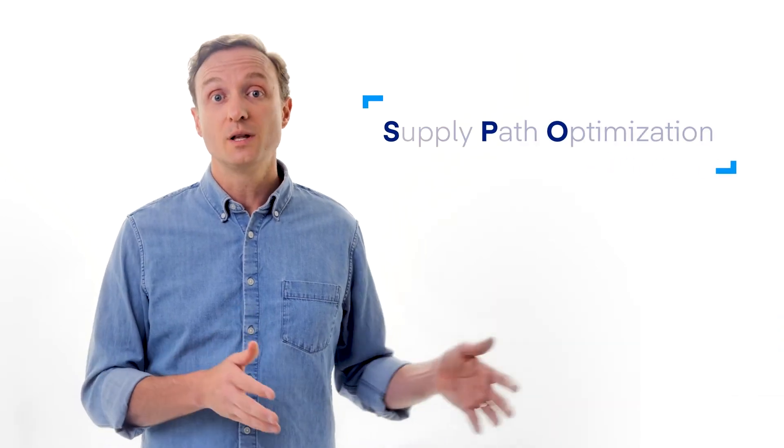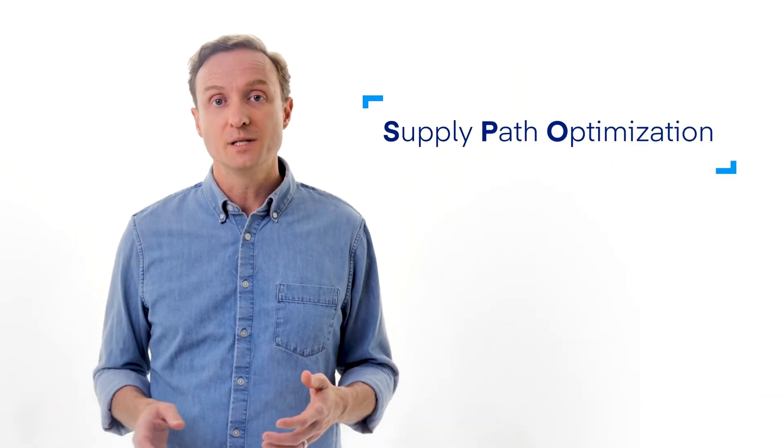You may have heard of another acronym that the AdTech ecosystem has put out there, and that's SPO. SPO stands for Supply Path Optimization. In order to understand it, unfortunately, we have to take a little bit of a history lesson and go back into the annals of AdTech history to understand how we got to this point.